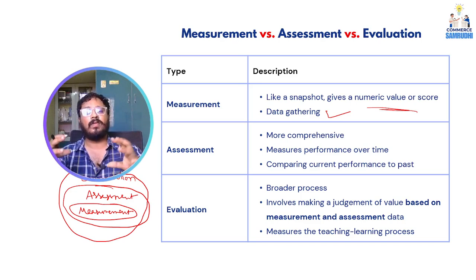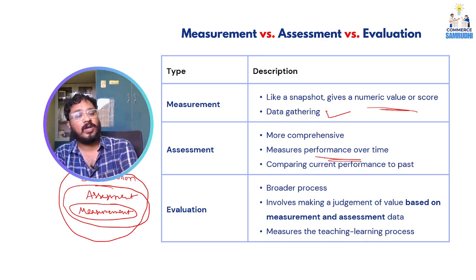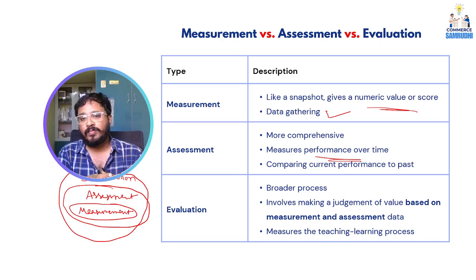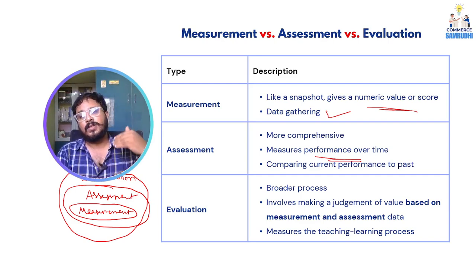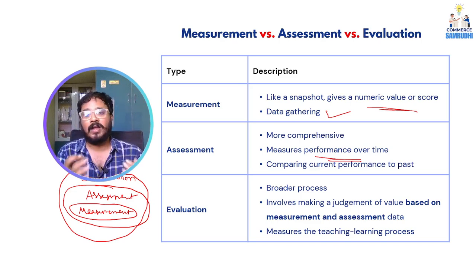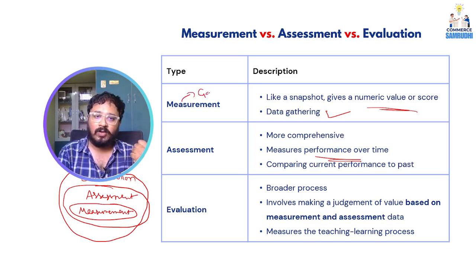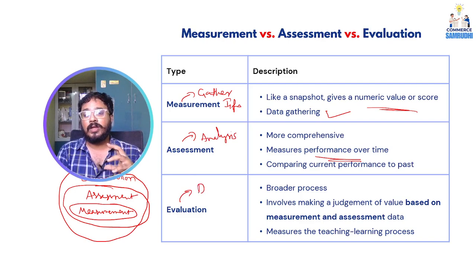Assessment is a little more advanced — a little more comprehensive. It measures performance over time. For example, half-yearly performance, annual performance, semester-wise performance comparison — that is part of assessment. And evaluation is an even broader term. Measurement is gathering of information, assessment is analysis, and evaluation is decision making.